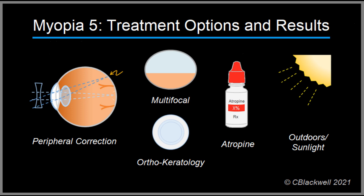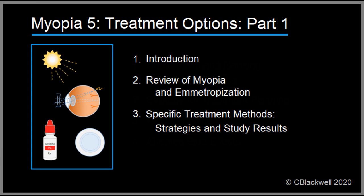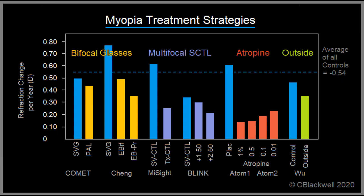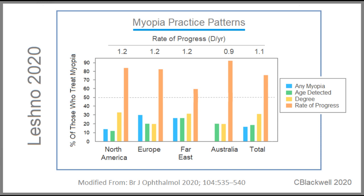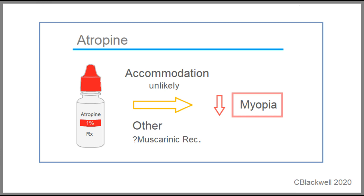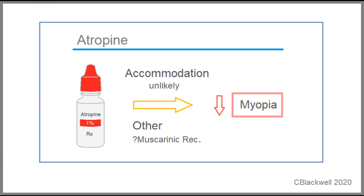These, then, are the leading treatment options for myopia prevention. We will end part one here. In part two, we assemble our treatment strategies and compare them to their controls, to each other, and for relative strength of effect. We go on to discuss who, when, and how to treat, including a survey of what pediatric ophthalmologists are doing in practice. We end with a look at atropine, how it works, and potential side effects.